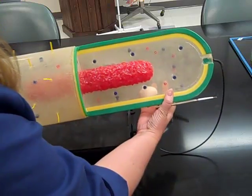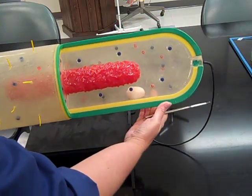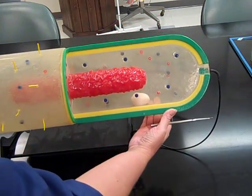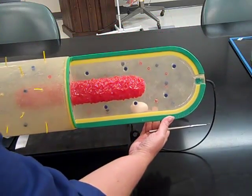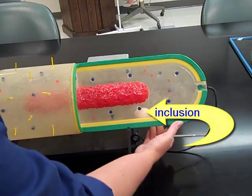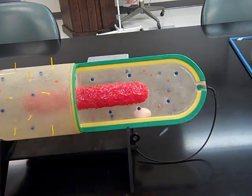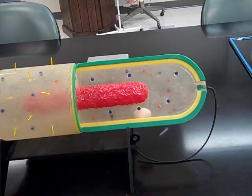Inside the cell, there is a little white structure. We refer to that as an inclusion. That can be a little bit of anything that the bacteria has accumulated and keeps in the cell without surrounding it in a membrane — it should be loose in the cell.